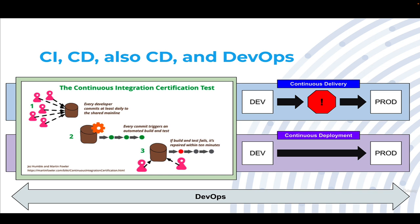Continuous integration starts with every developer on a team committing to a shared mainline — the same branch — on a daily basis at a minimum. Each one of those commits then triggers an automated build and test, and if that build and test happens to fail, it's fixed quickly, preferably within 10 minutes.